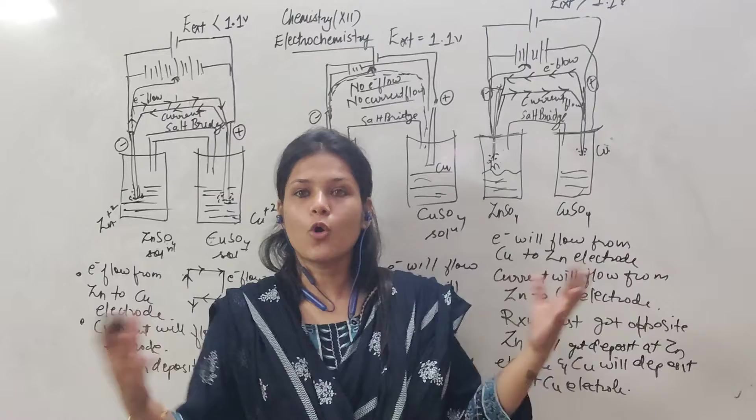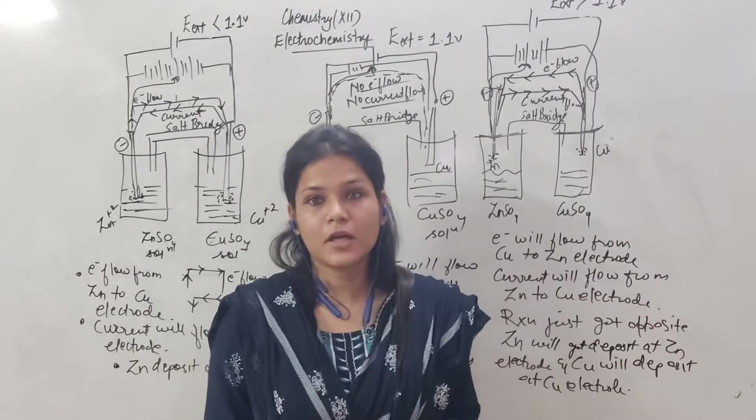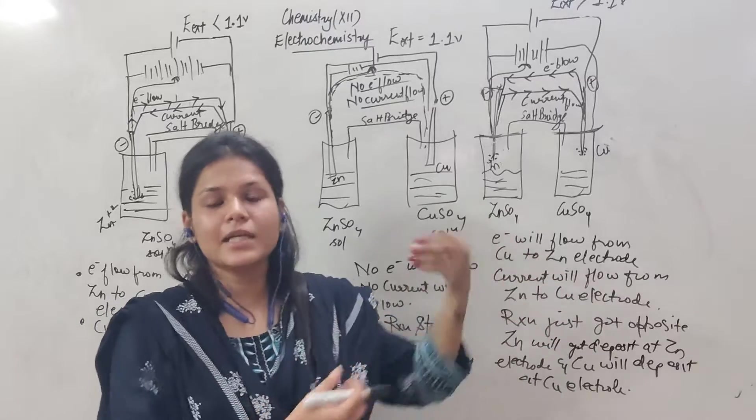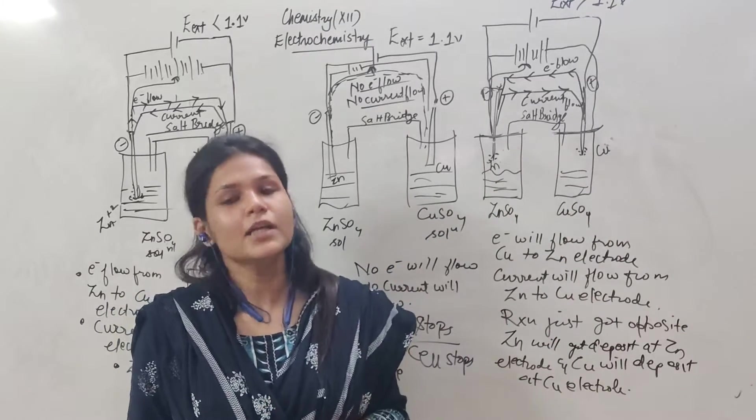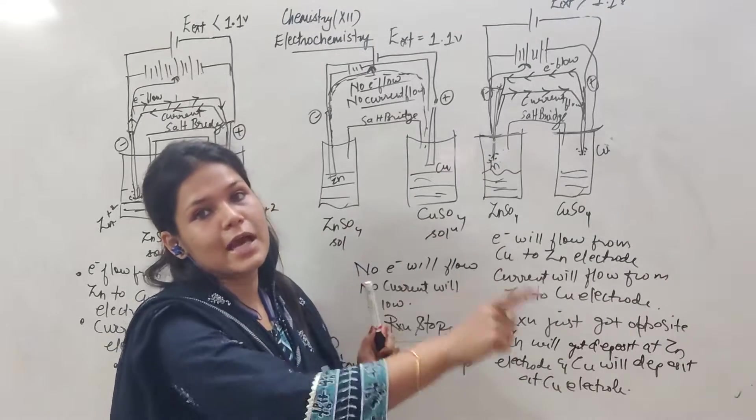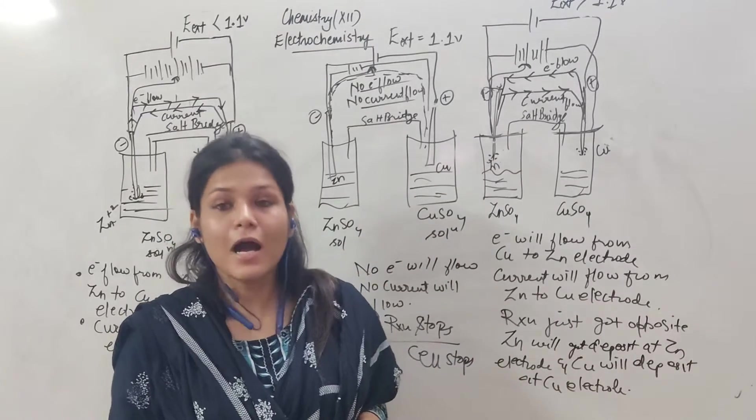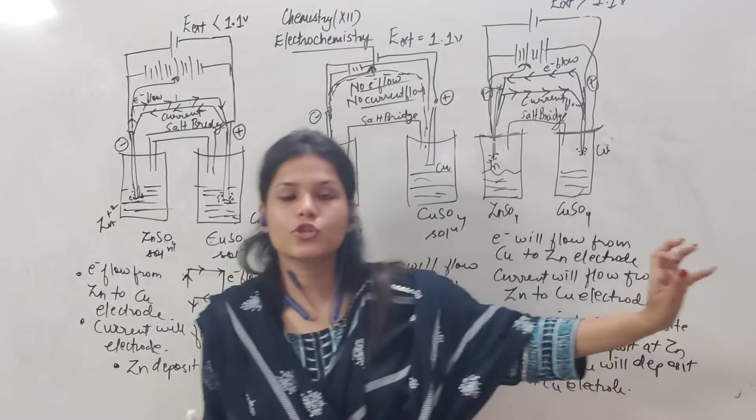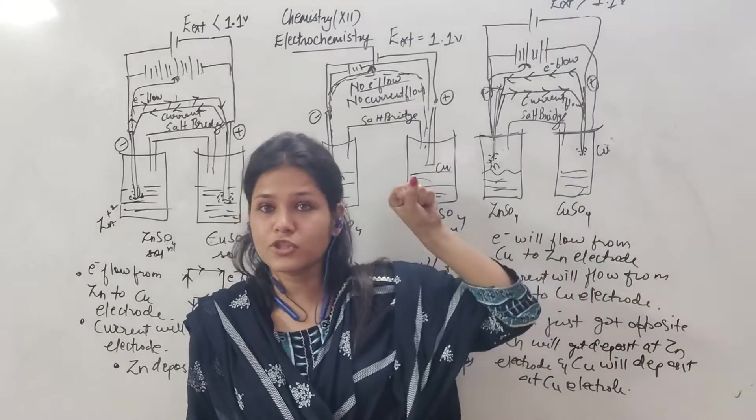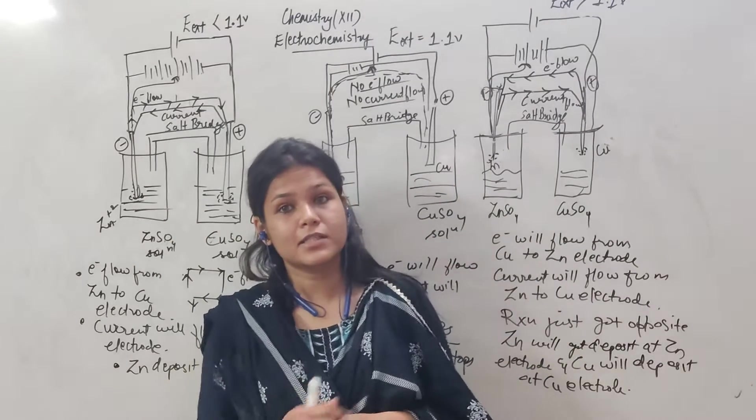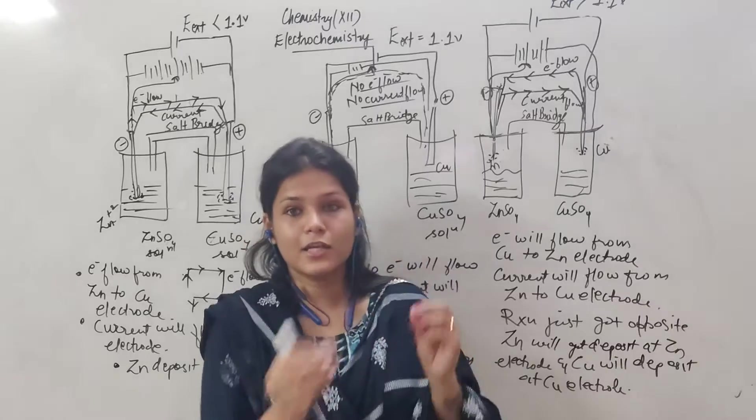So basically all the chemical reactions that happen around us are for a reason. We exchange the reactant and they got converted into product, and there is utility. The reactions are very useful. How? Because from that reaction, from the chemical reaction, you can take the energy from that chemical reaction and convert it into electricity, into electrical energy.